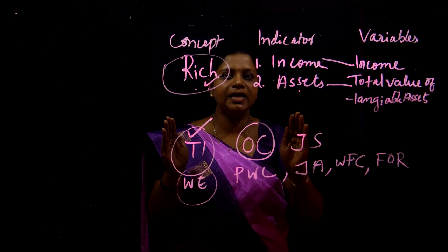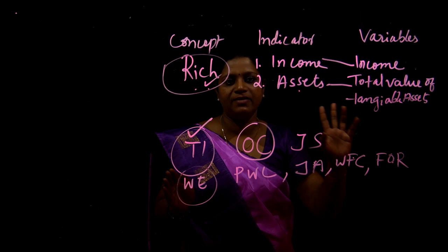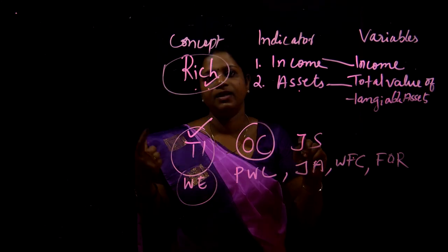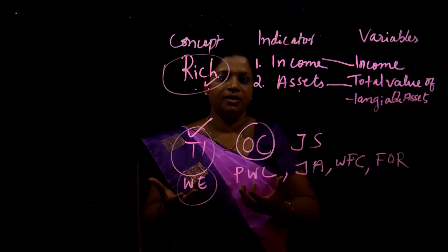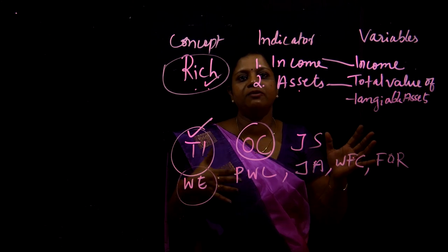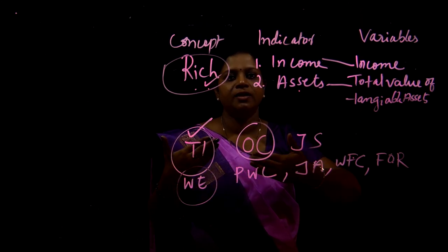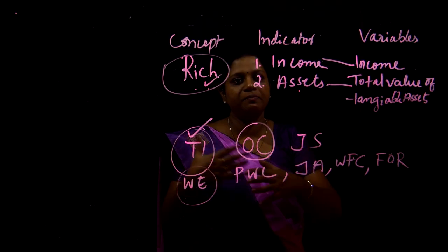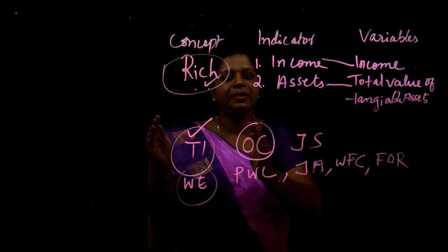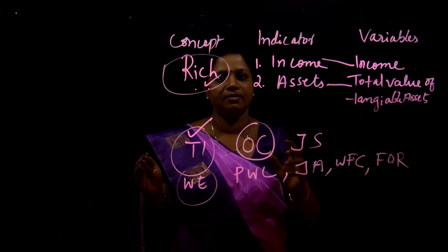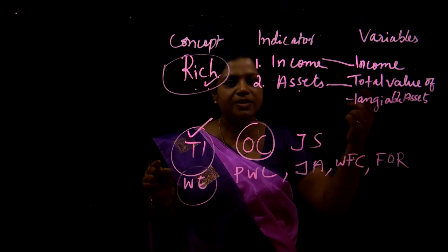Theory has been built at two levels: the abstract level and the empirical level. The abstract level is also known as the conceptual level — this is also called the theoretical framework or conceptual model developed by the researcher, defining a particular concept. Theory may be developed with deductive reasoning. There are two types of logical reasoning: deductive reasoning and inductive reasoning. At the abstract level, the researcher develops a theory going from general statements to specific observations — this is deductive reasoning.